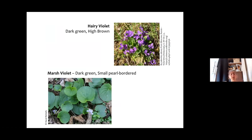All of these fritillaries feed on common dog violet, and there are two other varieties of violet favoured by a few fritillary species. Marsh violet, surprisingly, is found in damper habitats and has really big leaves — really easy to identify even when it's not flowering.